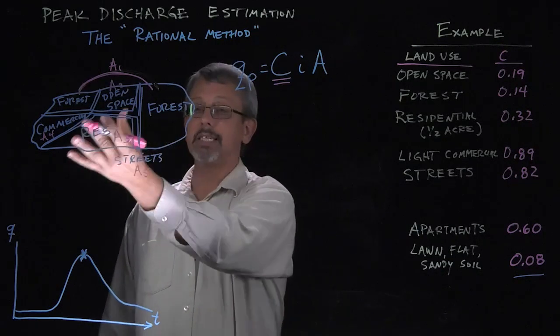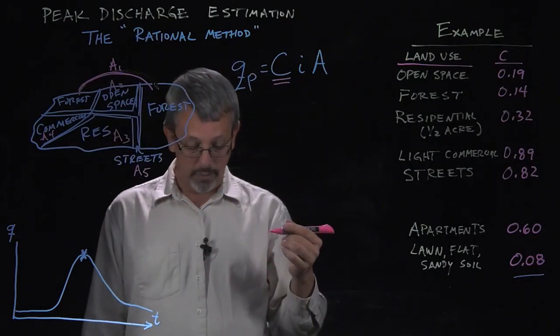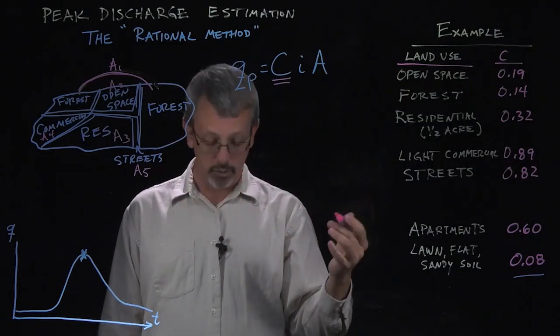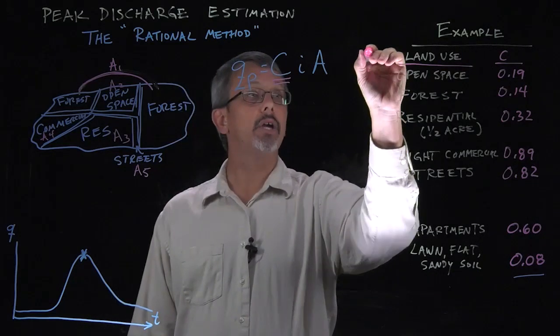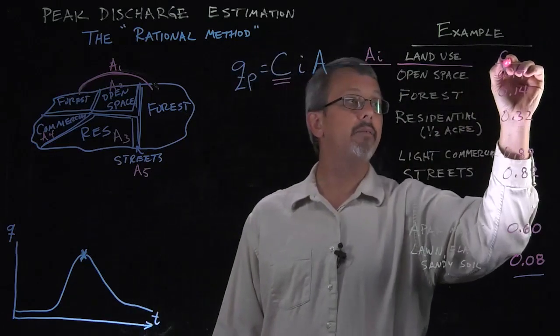For example, let's consider this space that I've sort of sketched here. And let's assume that there are some weighting, there's a different number of acres associated with each of these types of land use. For example, I'll make a list over here, A_i, and we have these values, C_i, where i is going to be the index for each of them.